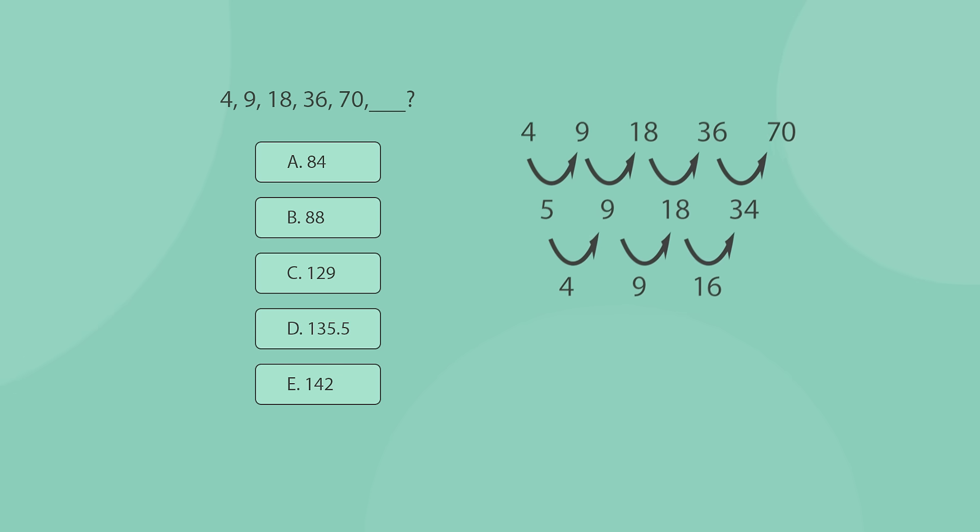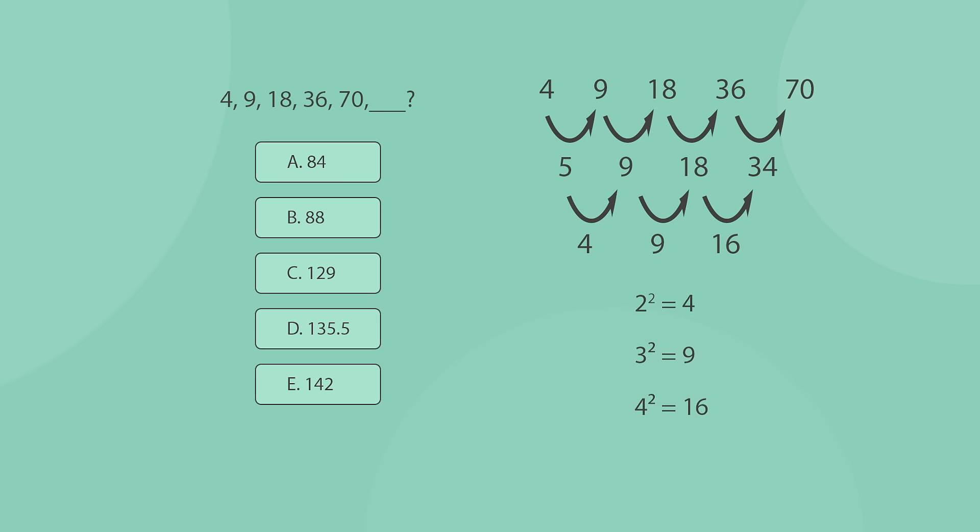Now, the pattern becomes clear. The second series of differences is the series of squares of natural numbers, starting with 2. The next number in that series should, therefore, be 25. Calculating backwards, we can come to the final answer. As I previously said, number series really do require quite a bit of experience and practice to solve quickly. So make sure you go over as many questions of that type as you can before taking the CCAT.